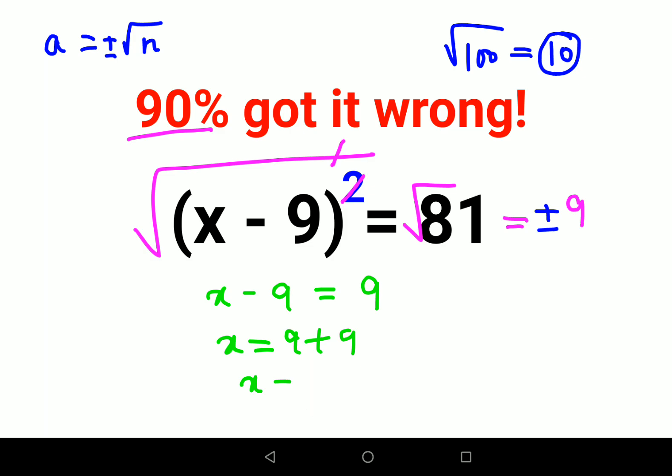Next here we'll have x minus 9 equals to minus 9, so here we have x equals to minus 9 plus 9, which comes out to be 0. So for this question I can say value of x equals 18 or it is 0. Either of the two values are absolutely correct.